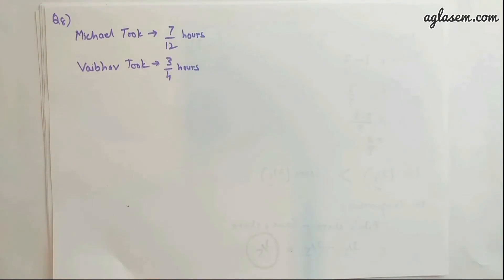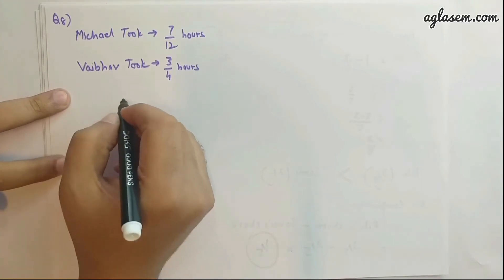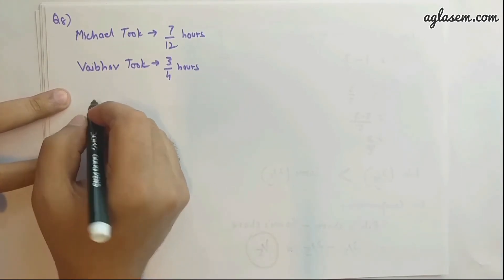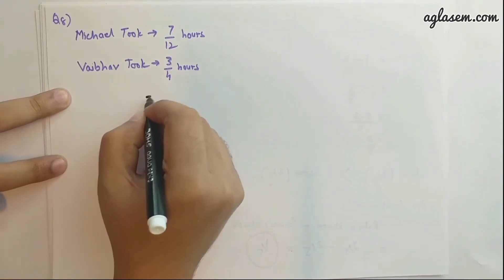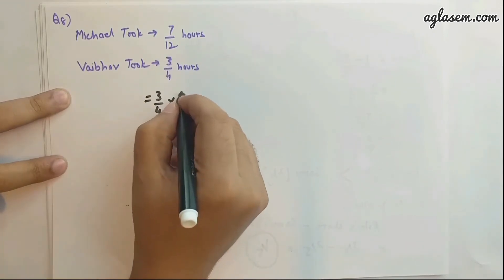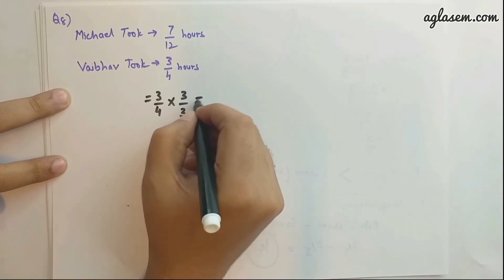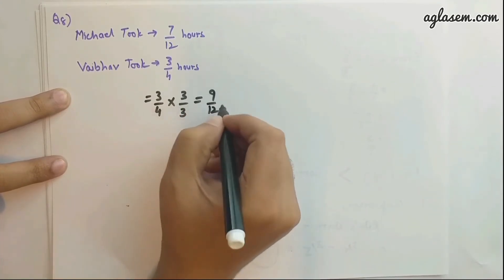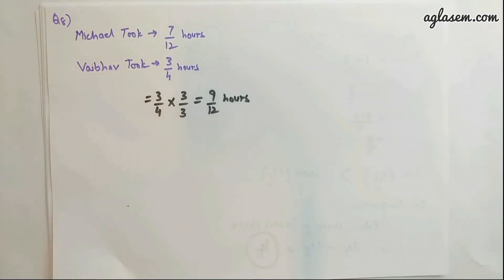Now it's very clear we can't compare these fractions directly, so we need to convert the fractions into like fractions. Let's convert 3/4 into like fraction. 3/4 can be easily converted by having a base of 12, so multiply by 3/3. That gives you 9/12 hours.